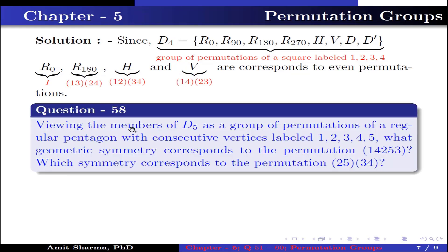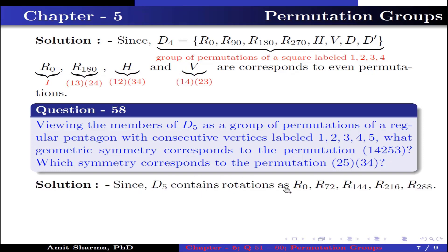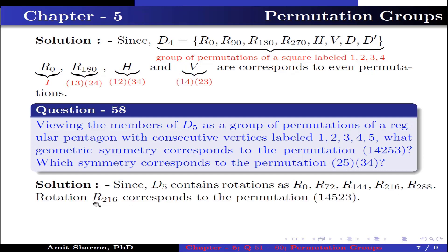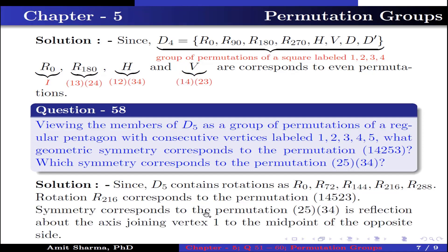Question number 58. Viewing the members of D5 as a group of permutations of a regular pentagon with consecutive vertices labeled 1 2 3 4 5, which symmetry corresponds to the permutation (1 4 2 5 3), and which symmetry corresponds to the permutation (2 5)(3 4)? Since D5 contains rotations r0, r72, r144, r216, r288, the rotation r216 corresponds to the permutation (1 4 5)(2 3). Symmetry corresponding to permutation (2 5)(3 4) is a reflection about the axis joining vertex 1 to the midpoint of the opposite side.